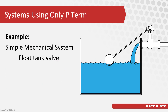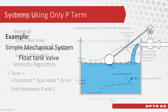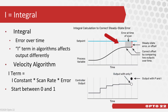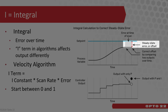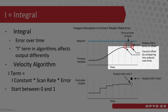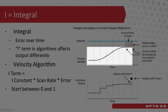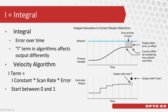Some devices can use just the P term, such as a mechanical system with a float on a tank valve. But usually, proportional control doesn't fully correct a system. Using only the gain could cause the process variable to stabilize at the wrong value — this is called a steady state error, or offset. To correct this, we want to look at the error over time. By comparing the readings of error over time, it's actually looking at the area under the curve, or the integral. As you sample more and increase the scan rate, the area under the curve is more accurate. Use the I term to help the process variable approach the setpoint.